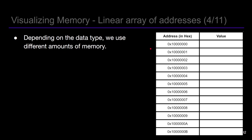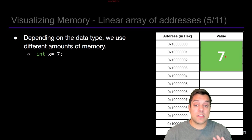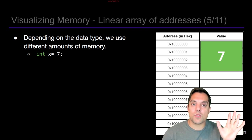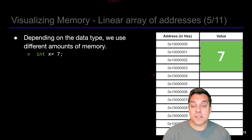Depending on the data we're trying to store, there are going to be different amounts of memory for each variable. For example, if I have int x equal to seven, that happens to take up four boxes — four bytes to represent the integer seven. It's not just the single value seven, but the possibility that an integer could be any value between negative two billion and two billion. That's why it takes up four boxes.